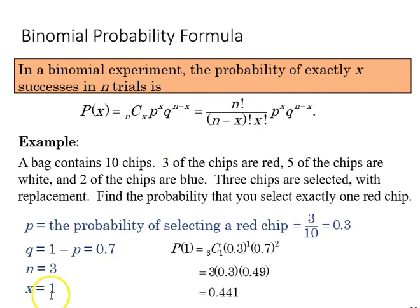Q is one because we're looking for getting a red chip, n is three trials, q is one minus p, which is 0.7. So we can plug all of that in, and we come up with 0.441.